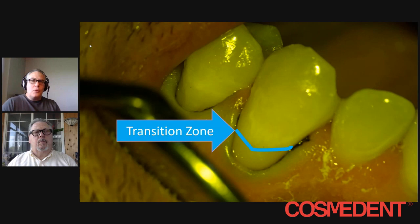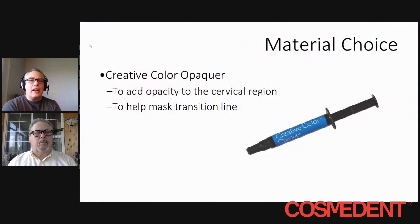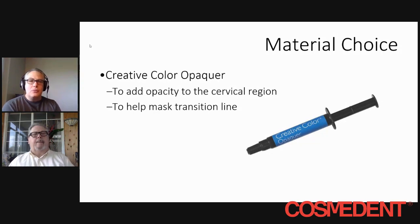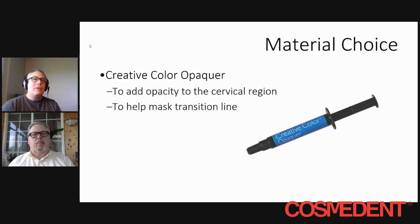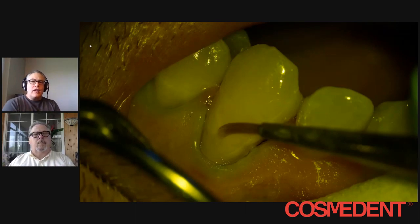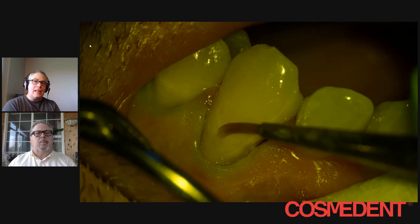One of the best ways to help a situation like this is with something like Creative Color Opaquer. This is a flowable liquid opaquer available from Cosmodent, and it will add some opacity to the cervical region, making it look more like natural tooth. More importantly, it's going to help mask the transition between your composite, the tooth, and that junction area that we prepped to blend the materials. You would take your Creative Color Opaquer on a number one brush and place it over the transition line and as cervical as you can. This will also help subsequent layers of composite to adhere.